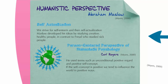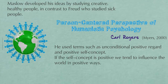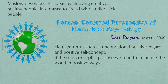Let's move on to a more positive framework — the humanistic perspective with Abraham Maslow, who you might remember from the hierarchy of needs in our motivation section. Maslow talked about self-actualization as the highest order of being; we strive for self-esteem and then self-actualization. Maslow developed his ideas by studying creative, healthy people such as Lincoln, Jefferson, and Eleanor Roosevelt, in contrast to Freud, who studied neurotic and sick people. Another theorist, Carl Rogers, followed Maslow and talked about person-centered perspectives in humanistic psychology, using terms like unconditional positive regard and positive self-concept. If the self-concept is positive, we tend to influence the world in positive ways. Can you suggest some implications of this for professions like nursing, medicine, and education?